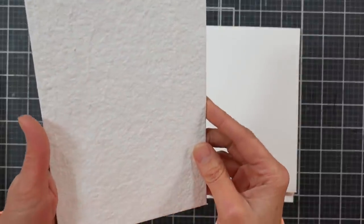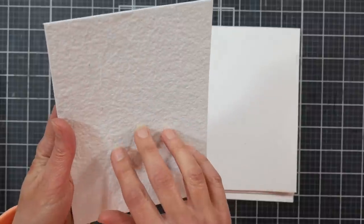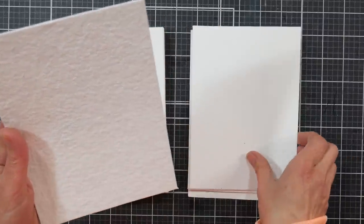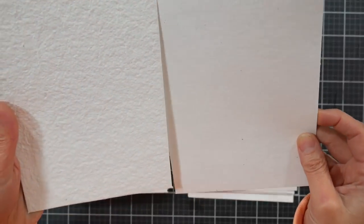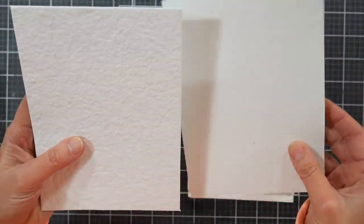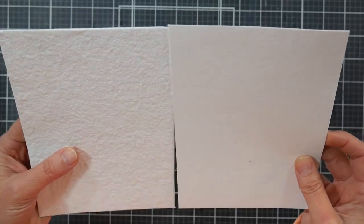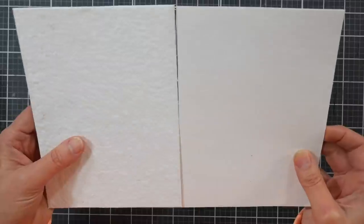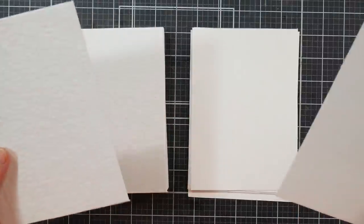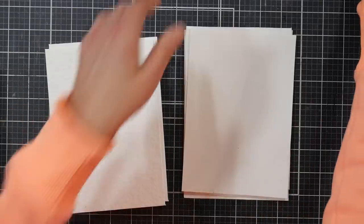I'm hoping the camera will pick up the texture. This is how it comes. This is the Shizan Design rough surface. It just says rough surface, not cold press, and then this is one of the ones I made. This is the same paper from the same pack, and this was the quote-unquote hot press that I made.